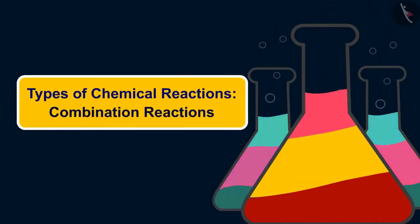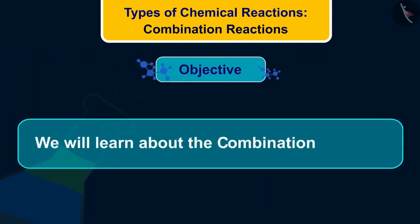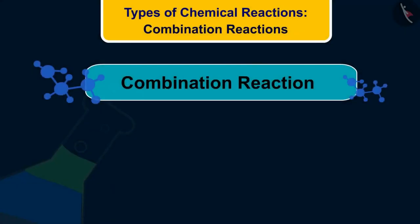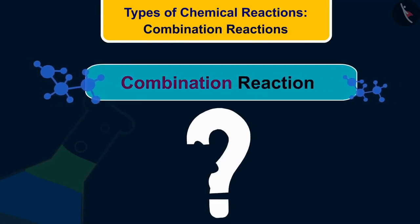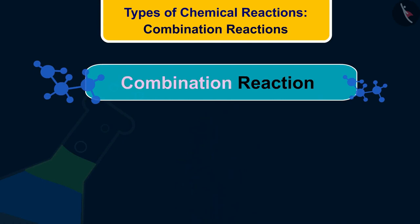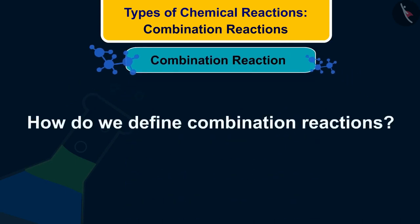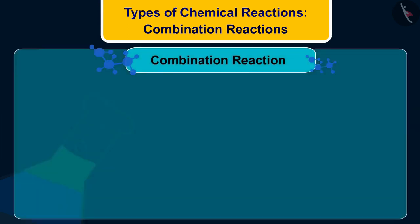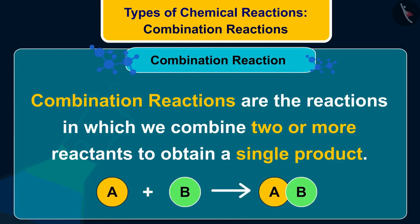Welcome to this video. In the previous video, we learned about the balanced chemical equation. Today, in this video, we will learn about the combination reaction. Let us now begin with today's topic: combination reaction. The word combination tells us that we are combining something. Combination reactions are the reactions in which we combine two or more reactants to obtain a single product.